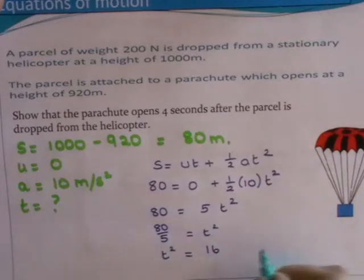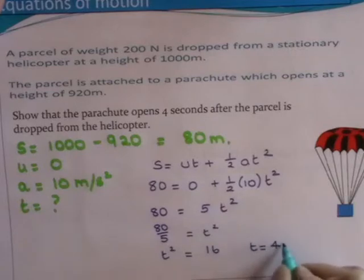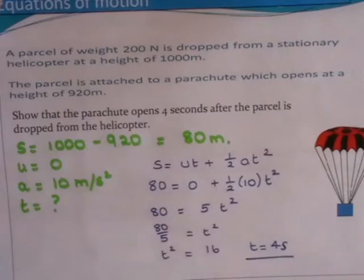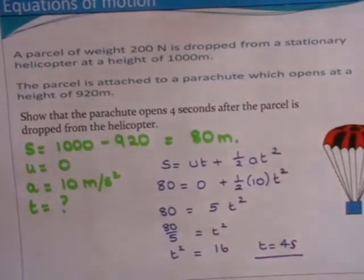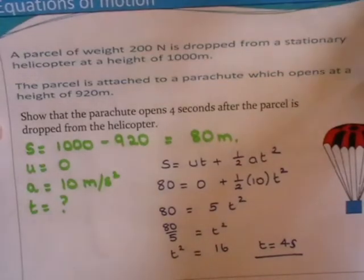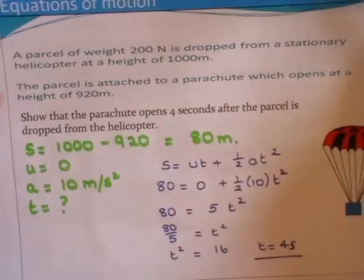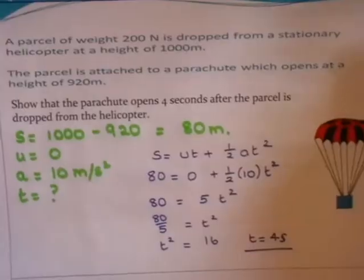And therefore the square root of 16 is equal to 4, and it's time, so it's in seconds. So that just proves it. Now the 200 newtons there had nothing to do with it. It was in the question and it's maybe just there to give you a red herring or something like that.